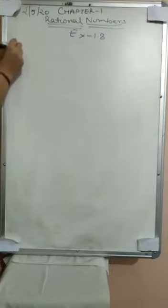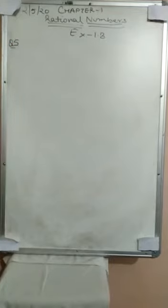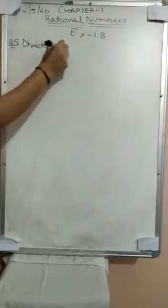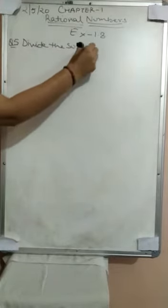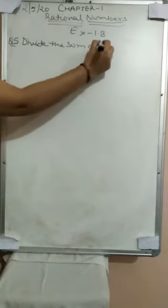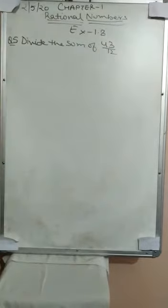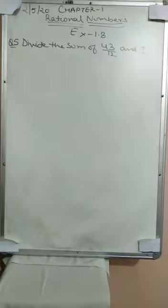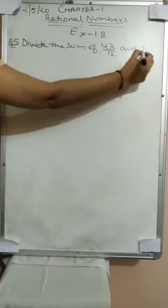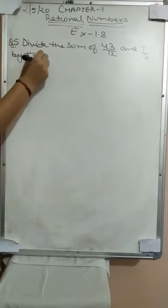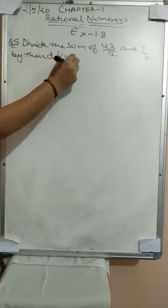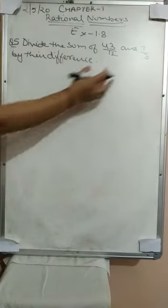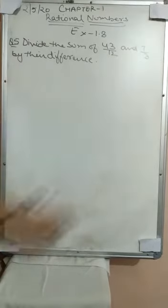So question number 5 says: divide the sum of 43/12 and 7/3 by their difference. What the question says is, first of all we have to find the sum of these two terms, then the difference, and then divide.